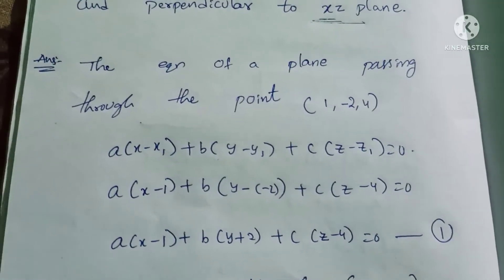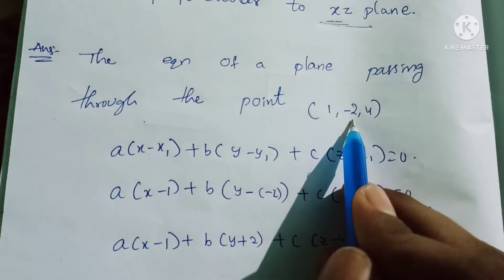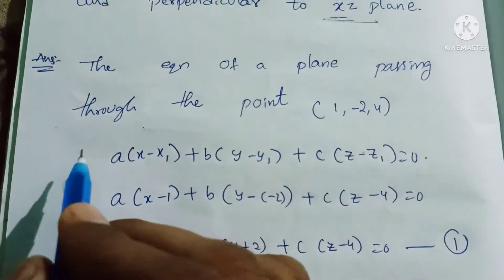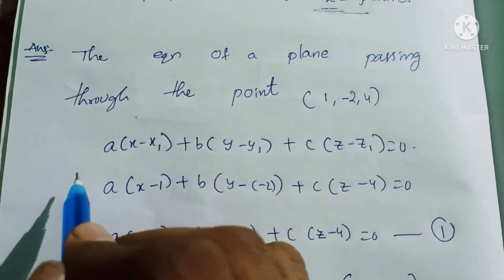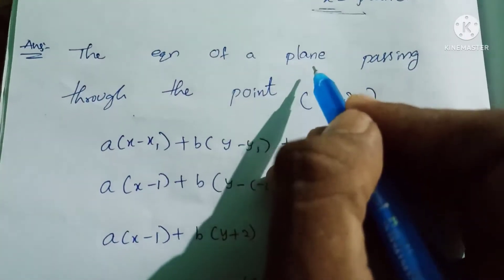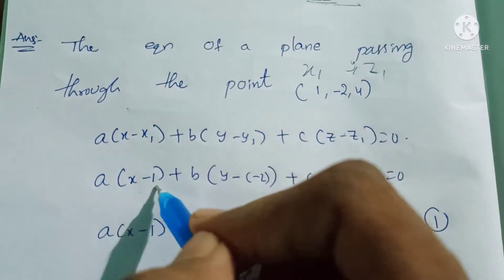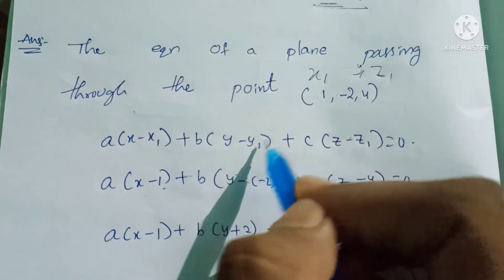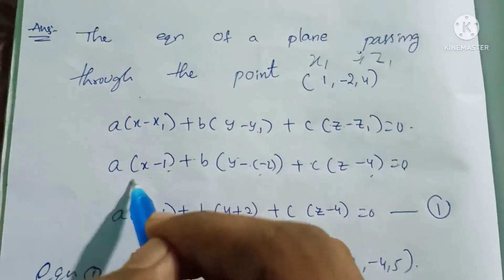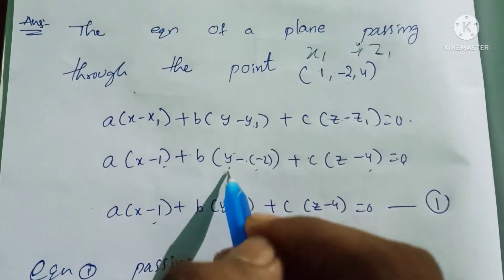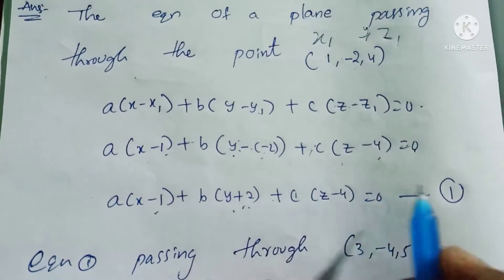The equation of the plane passing through the first point (1, -2, 4) uses the formula: a(x - x1) + b(y - y1) + c(z - z1) = 0. Substituting x1=1, y1=-2, z1=4, we get: a(x - 1) + b(y + 2) + c(z - 4) = 0. This is equation 1.